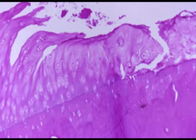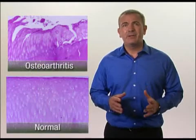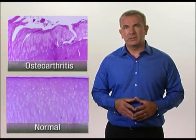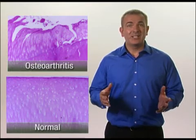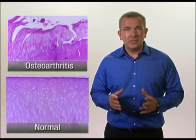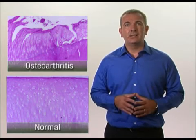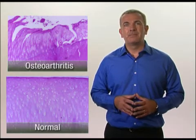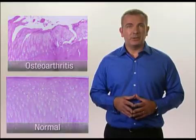This picture shows a microscopic view of articular cartilage from a joint with osteoarthritis. It looks very unhealthy compared to normal cartilage — overall there's less cartilage there. The surface is uneven and there are cracks in the cartilage layer. This cartilage will not be able to function properly.